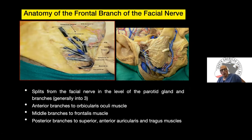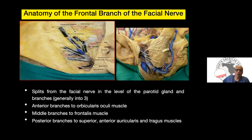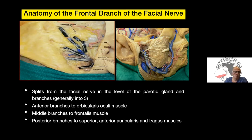Regarding the facial nerve, there are usually three branches at this level: the anterior branch going to the orbicularis oculi muscle, middle branches going to the frontalis muscle, and posterior branches innervating the superior anterior orbicularis and tragus muscles.